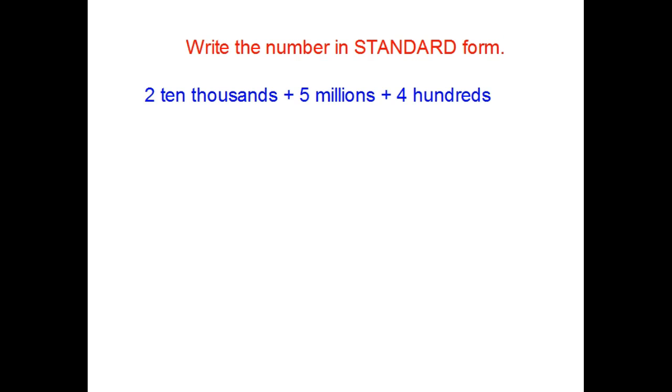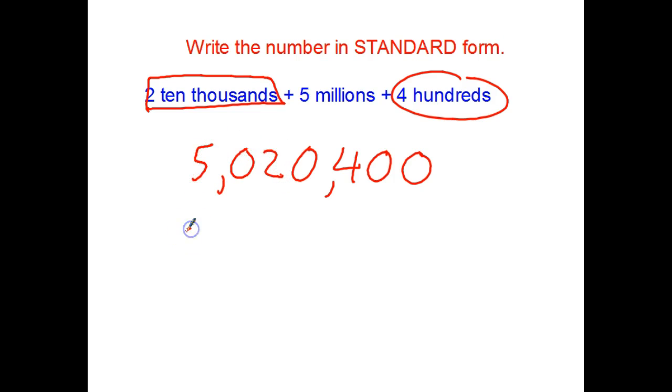Try a couple more out. I don't have any ones. I don't have any tens. I do have hundreds. There's four of them. Get my comma. Thousands. Zero. Ten thousands I do have. There's two of them. Hundred thousands. None. And, millions. I finally have some. So, five million, twenty thousand, four hundred.